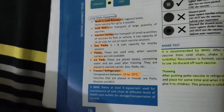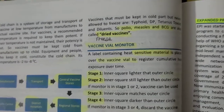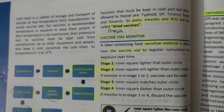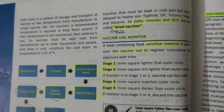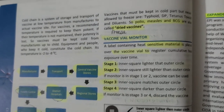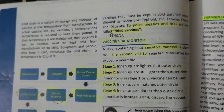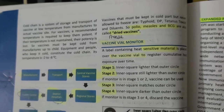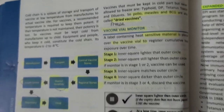Freeze-dried vaccines are vaccines that must be kept frozen properly. Examples include polio, BCG, and measles vaccines. Polio workers must keep these in coolers. If the vaccine is not maintained at the correct temperature, it must be discarded.